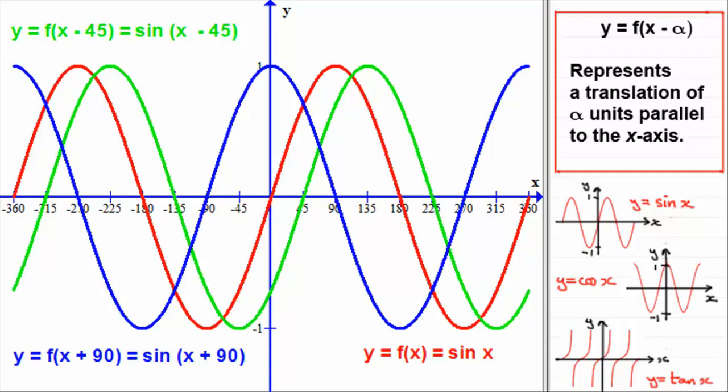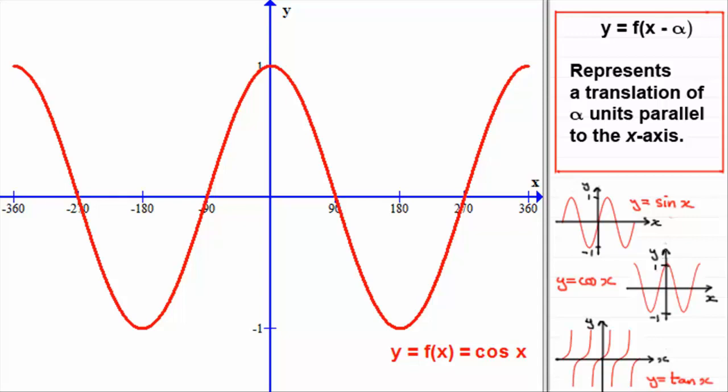What I'd like you to do is look at the cosine graph. If we let y equal cos x, or f of x equal cos x, see if you can sketch y equals f of x plus 45, which is the cosine of x plus 45, replacing x with x plus 45. Also sketch y equals f of x minus 90, which is cosine of x minus 90. You might like to pause the video, come back in a moment, and we'll go through these two graphs.